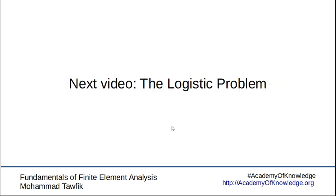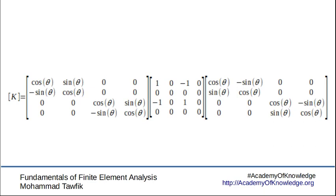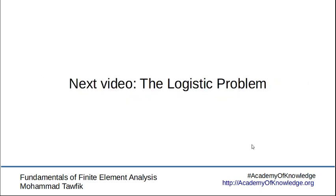In the next video we'll handle the other problem regarding the logistic problem of the truss structure. To summarize quickly: in this video we obtained a global stiffness matrix in terms of the local stiffness matrix. To obtain this local stiffness matrix, we expanded it by adding two redundant equations, and then by multiplying from the left and right by the inverse transformation matrix and transformation matrix respectively, we obtained the global stiffness matrix. See you next video.